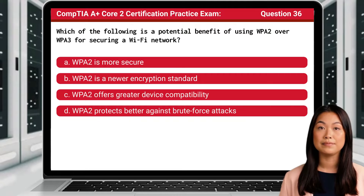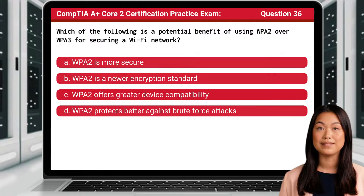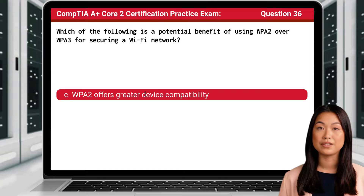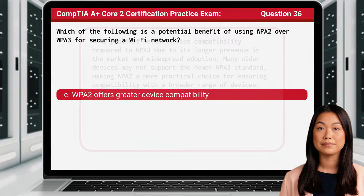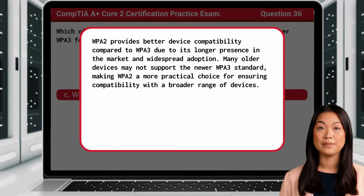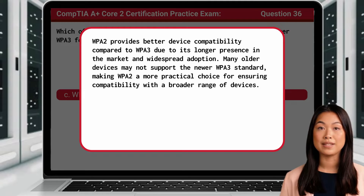Question 36. Which of the following is a potential benefit of using WPA2 over WPA3 for securing a Wi-Fi network? The answer is C: WPA2 offers greater device compatibility. WPA2 provides better device compatibility compared to WPA3 due to its longer presence in the market and widespread adoption. Many older devices may not support the newer WPA3 standard, making WPA2 a more practical choice for ensuring compatibility with a broader range of devices.